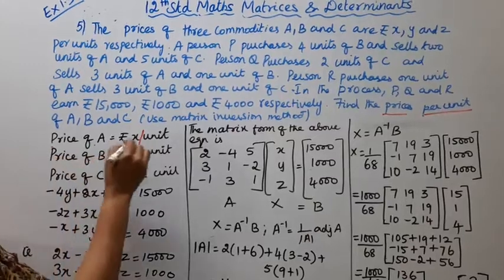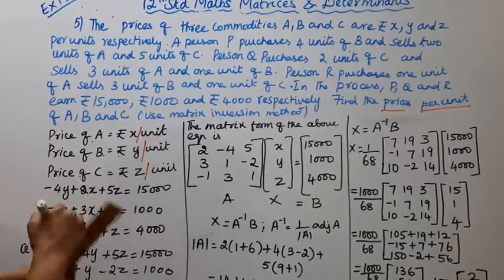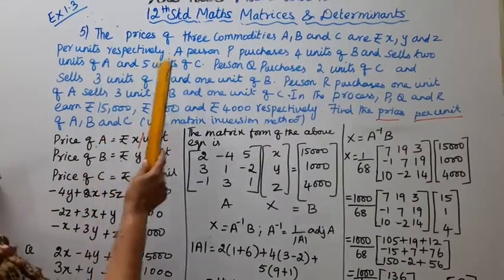Price of B, rupees Y per unit. Price of C, rupees Z per unit.